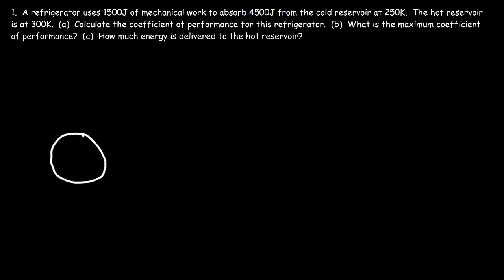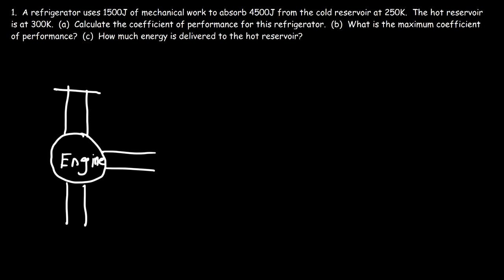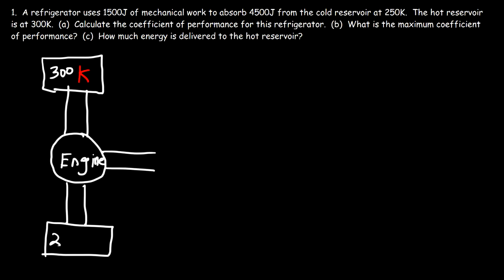Let's draw an energy diagram. Here is the engine. Above we have the hot reservoir at 300 Kelvin, and below we have the cold reservoir at 250 Kelvin. We need to put in mechanical work in order to take heat from the cold reservoir and pump it to the hot reservoir. The refrigerator is basically the opposite of a heat engine.